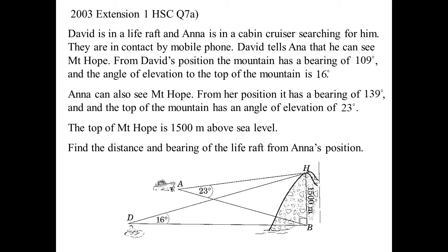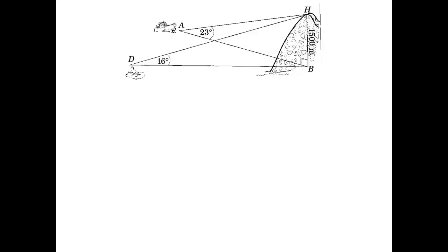Find the distance and bearing of the life raft. All right. So we've got a three-dimensional problem. Let's pull it out into some two-dimensional faces. So I've got one triangle there, HDB. We know the height of Mount Hope was 1,500 metres. Angle of elevation, 16. So I've got that one. I've got another one with Anna. Anna, the only difference there is the angle of elevation was 23 degrees.